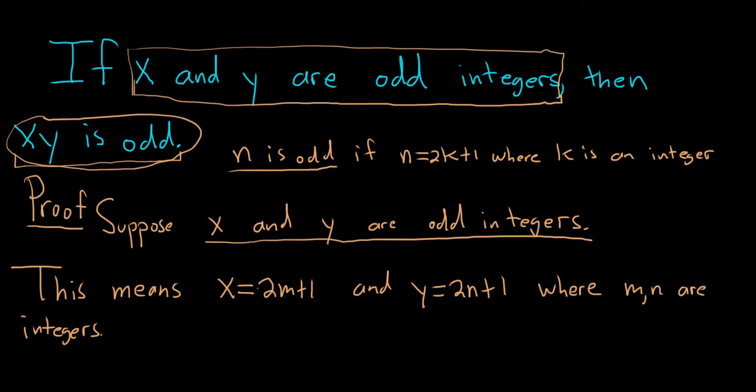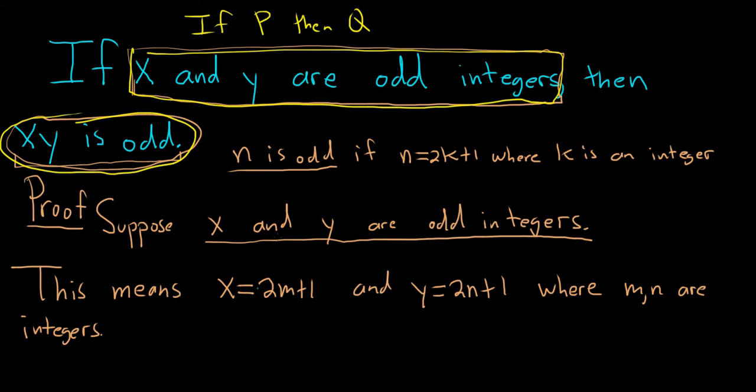So a quick recap. You start the problem by assuming the part that's right after the if. You can think of this as an if p, then q statement. So p is our assumption, q is what we have to show. Then you just write down what it means for x and y to be odd. So this is straight from the definition of an odd integer.